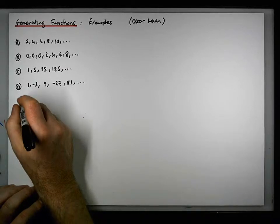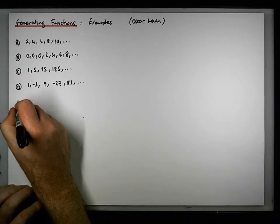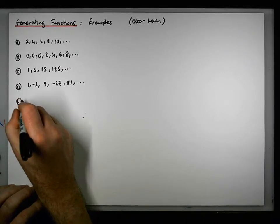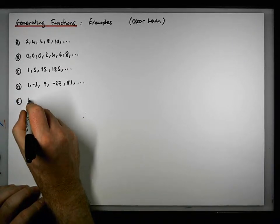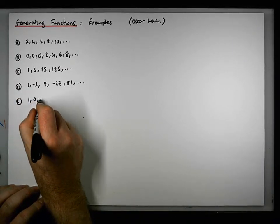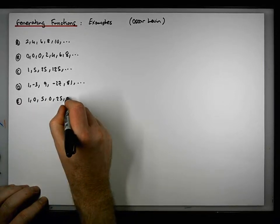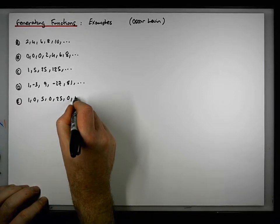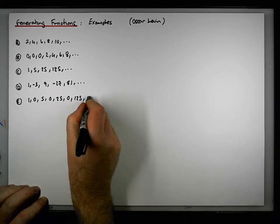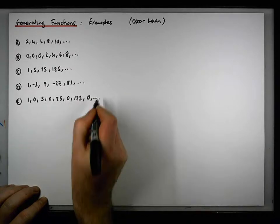E is the sequence 1, 0, 5, 0, 25, 0, 125, 0, and so on — the terms of sequence C with a zero inserted between each term.